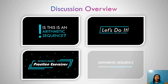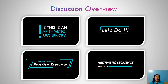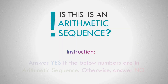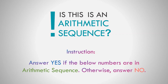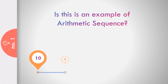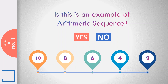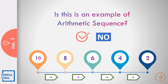Let us try to identify if this is an arithmetic sequence. Answer yes if the numbers are in arithmetic sequence, otherwise answer no. In the given sequence 10, 8, 6, 4, and 2, do you think it is an example of the arithmetic sequence? Yes! Because the common difference from the first up to the last term is equal to negative 2.